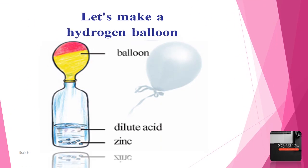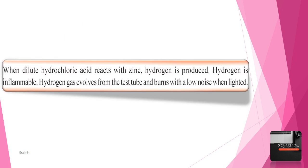Let's make a hydrogen balloon. Materials required: balloon, dilute acid, zinc. When dilute hydrochloric acid reacts with zinc, hydrogen is produced. Hydrogen is inflammable. Hydrogen gas evolves from the test tube and burns with a low noise when lighted.